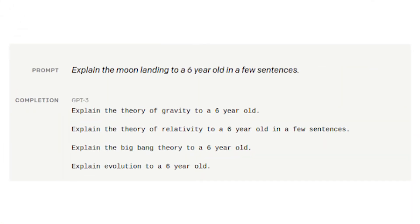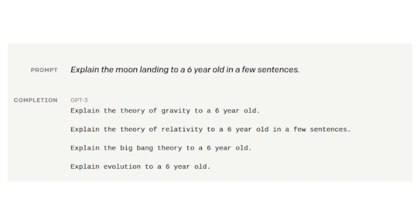But why did GPT-3 fail to achieve human-like conversations, and why was InstructGPT developed? There are two primary reasons. One problem with GPT-3 is that the model output is not aligned with user instructions — in short, GPT-3 cannot generate a user-preferred response.